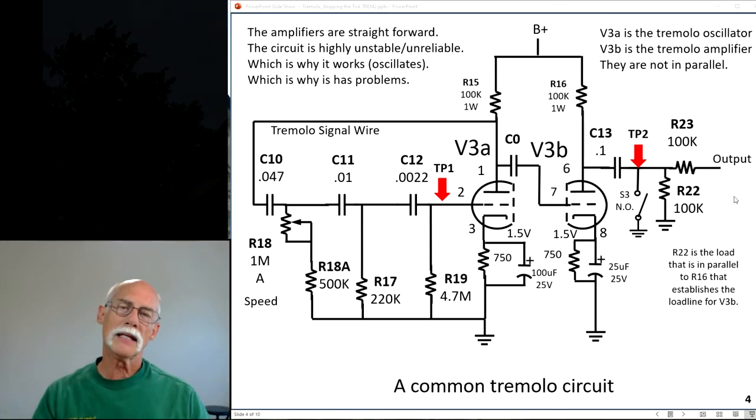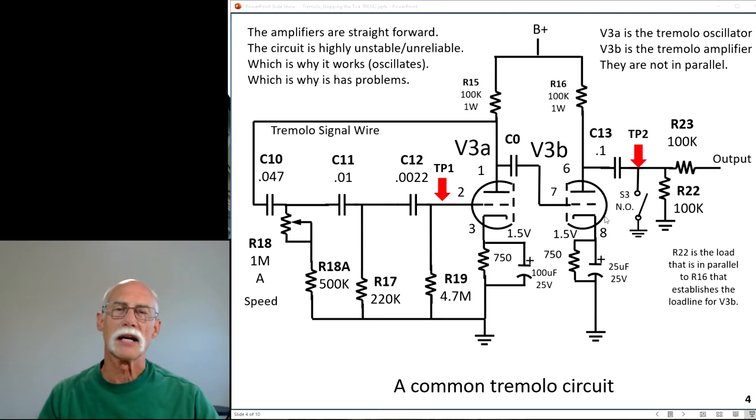In a common tremolo circuit it looks like this. I talked about this in the last video. This is the oscillator, this is the amplifier. I have two test points: one on the grid of the oscillator and one on the output of the amplifier.